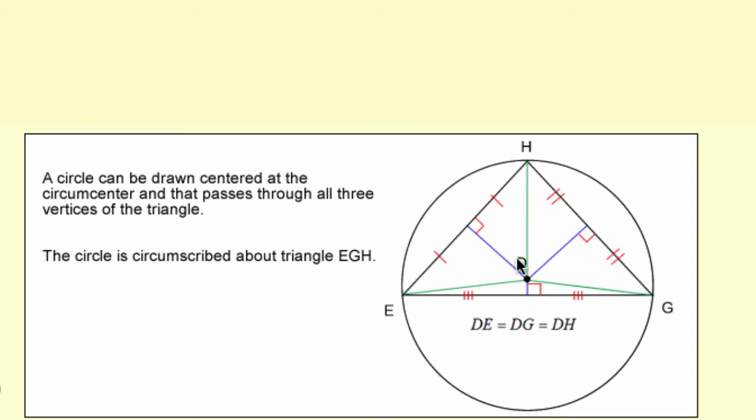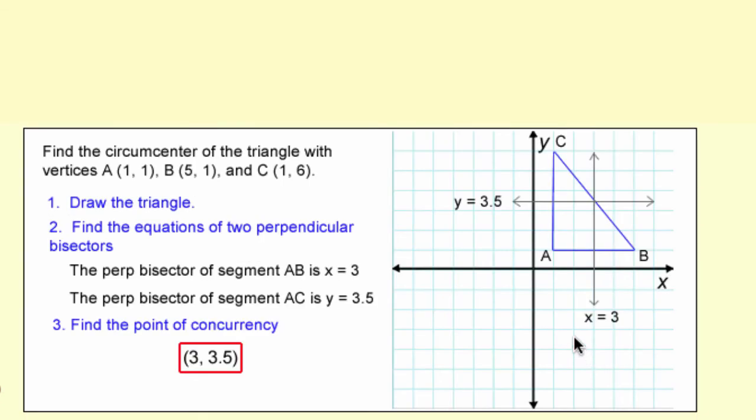Since the circumcenter is the point of concurrency for perpendicular bisectors, a lot of right triangles are formed. You can apply that by finding unknown measures within these triangles based on the circumcenter. You can also find the circumcenter using coordinates on the coordinate grid.